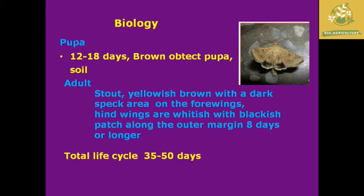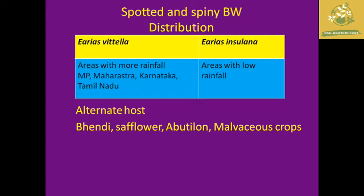The adult lives more than 80 days and the total life cycle of the American boll worm is 35 to 50 days. A picture of the American boll worm is provided. The next pests are the spotted and spiny boll worms, which are similar in nature.